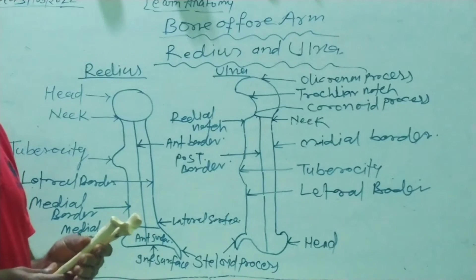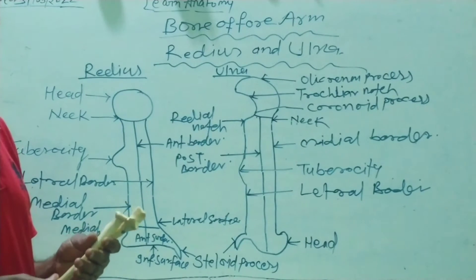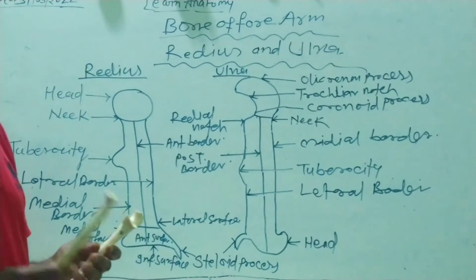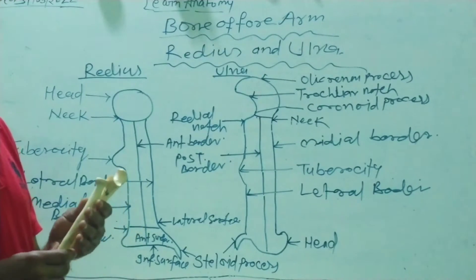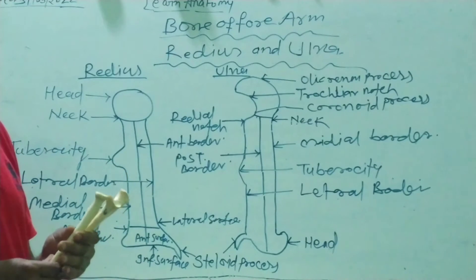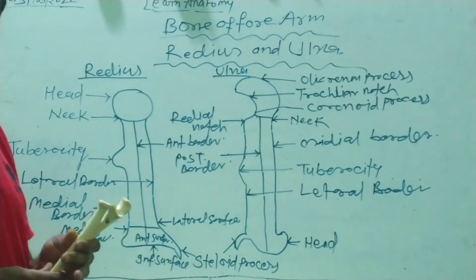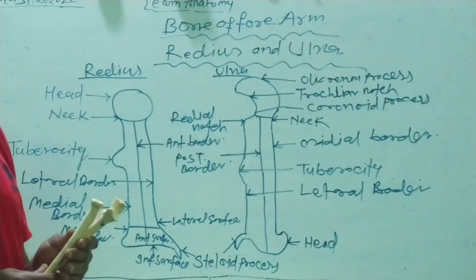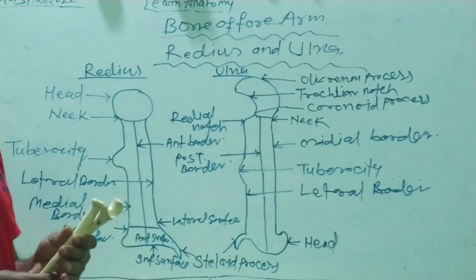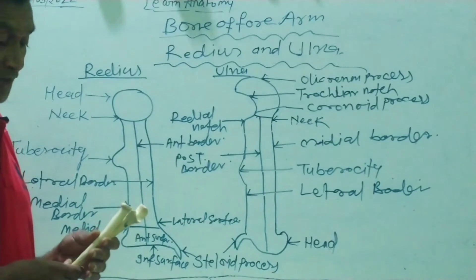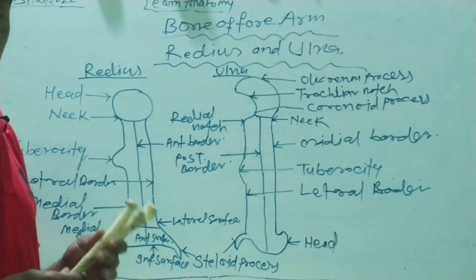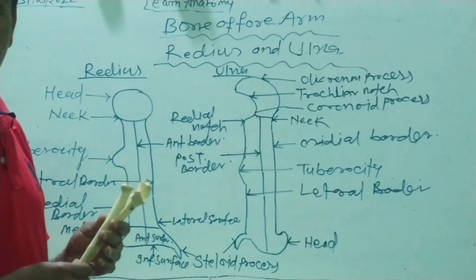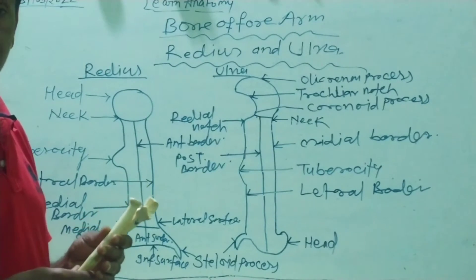These are the two parallel long bones that make up the forearm or antebrachium. The first is the radius, and the second bone is the ulna. The radius is the lateral long bone of the forearm, and the ulna lies on the medial side. These parallel long bones lie just below the brachium — the radius and ulna lie just below the arm.